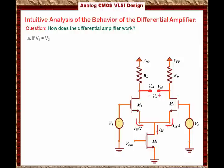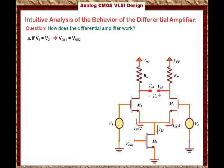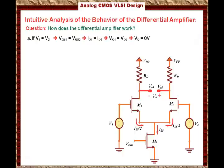Here is the first case: what happens if V1 and V2 are equal? If V1 and V2 are equal, the source of M1 and M2 is the same, then Vgs1 and Vgs2 are the same, which leads to I1 equals I2, which leads to Vout1 equals Vout2, then the differential output Vout is 0.